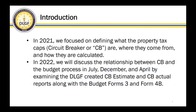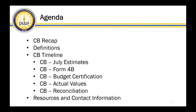Last year's presentation really focused on what the property tax caps are, where they come from, and how they're calculated at a tax bill level. This year, what we want to do over the next hour is discuss the relationships between circuit breaker and the budgeting cycle — specifically as it relates to three key periods: July, December, and April. To do that, we're really going to examine the Form 3 and the Form 4B along the way.